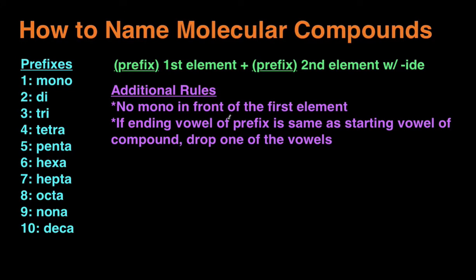Hey guys, this is Michael from Conker Chemistry. In today's video we'll be talking about how to name molecular compounds. Molecular compounds are compounds made of exclusively non-metals — two or more non-metals together. An example of that is SO2. Both S and O are non-metals, so this is going to be a molecular compound.